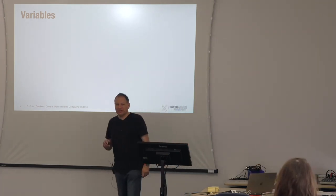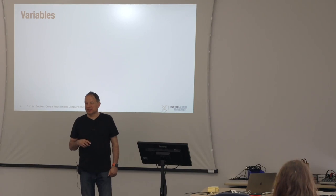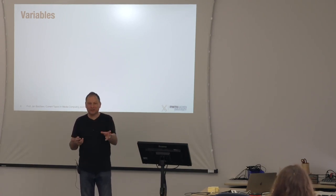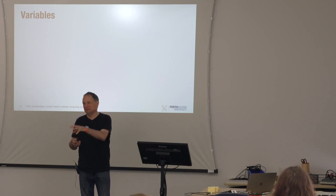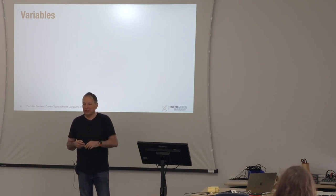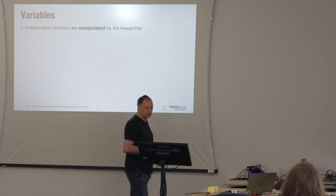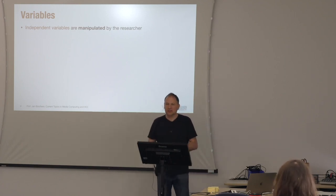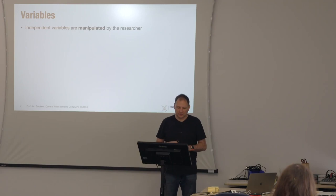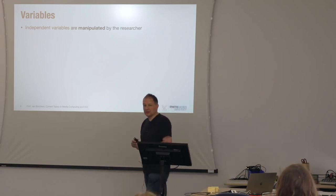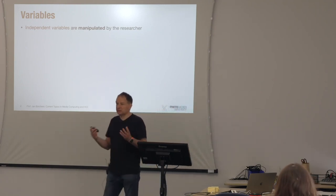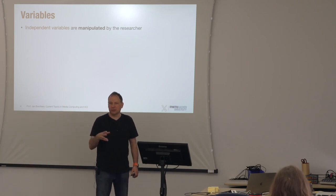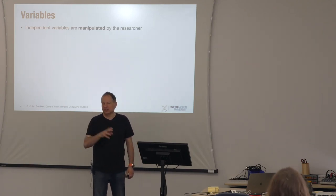The name 'independent variable' is a little confusing, because it sounds like you can do whatever you want, but actually that's the one you hold on to and control. This is the one that you manipulate in a controlled fashion. So if you want to test something with two different kinds of input devices, the type of input device is the variable you're controlling — it has two separate values.